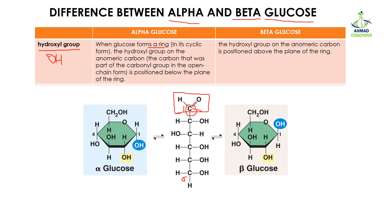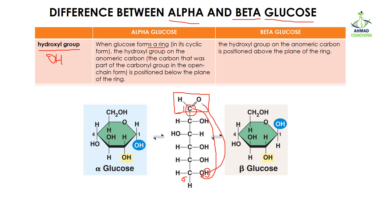When this linear structure is converted into the cyclic structure, this carbon is going to make a bond with the oxygen of the sixth carbon. When oxygen forms a bond with the carbon, this hydrogen is released. This hydrogen is going to make a bond with the oxygen, and this oxygen will be converted into OH. Now the position of this OH is critical in making glucose alpha or beta.